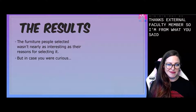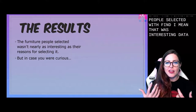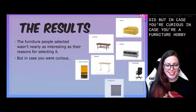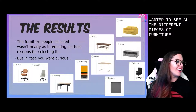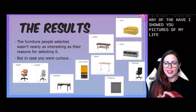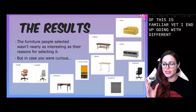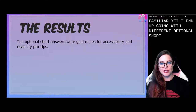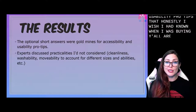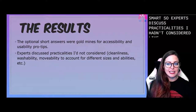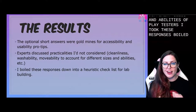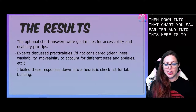From what you said, the furniture people selected was fine — that was interesting data, but not nearly as interesting as why people selected the furniture they did. In case you were curious, these were the results of which furniture pieces were selected. As you can tell, I didn't actually purchase any of these, as you saw in the lab pictures. Those optional short answers were absolute gold mines for accessibility and usability pro tips that I wish I had known when buying furniture for my house, because you all are really smart. Experts discussed practicalities I hadn't considered like cleanliness, washability, movability, and how to account for different sizes and abilities of playtesters.